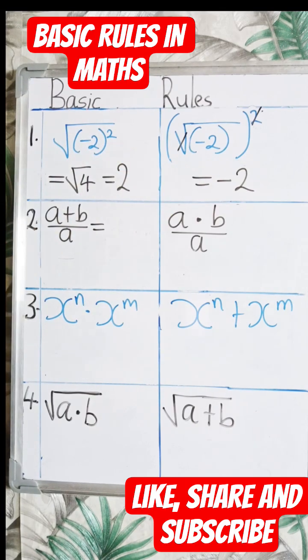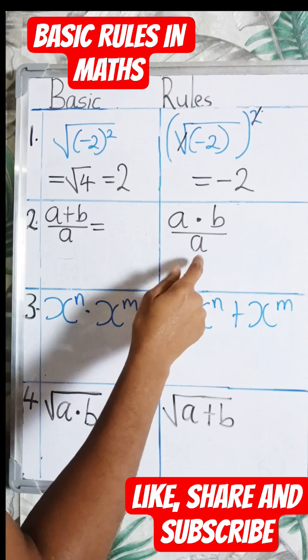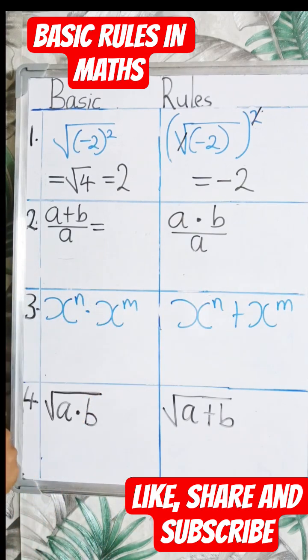Now in this case, number 2, we have a plus b divided by a. And here we have a times b divided by a. These two expressions are not the same.